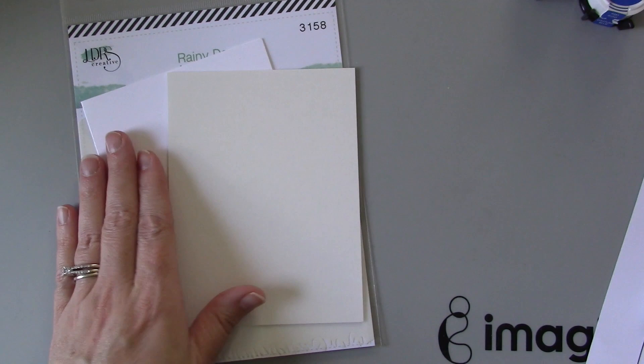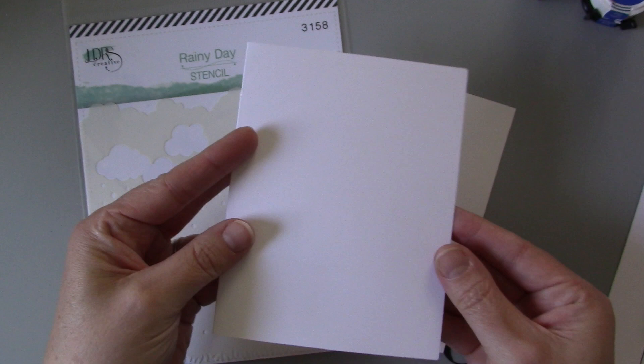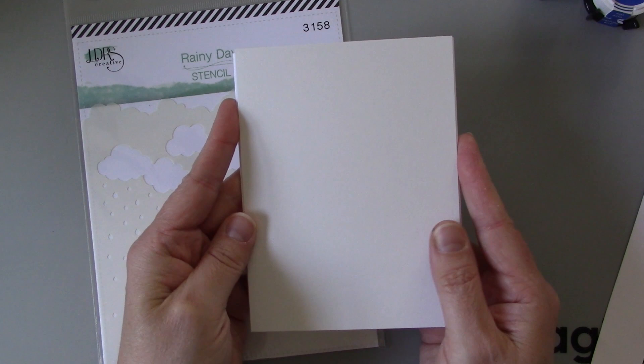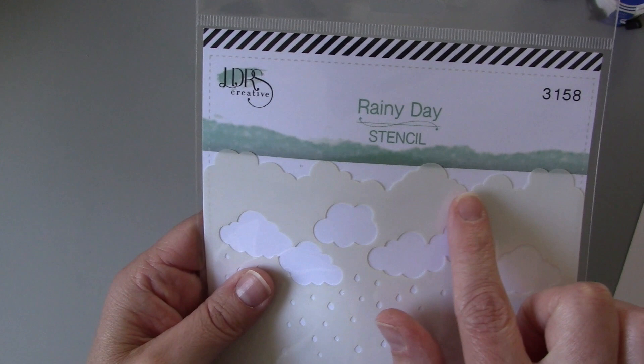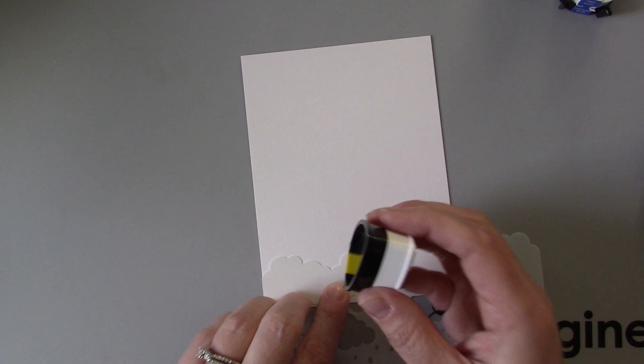You'll need a silicone stamp set or rubber stamp set with a sentiment that you like and I also have an A2 size card base and A2 is a four and a quarter by five and a half inch and then a panel that's cut to the same size to go on top of it. So just some basic cardstock. I'll also be using this wonderful rainy day stencil from LDRS Creative to help me make this card.